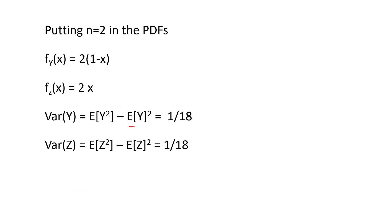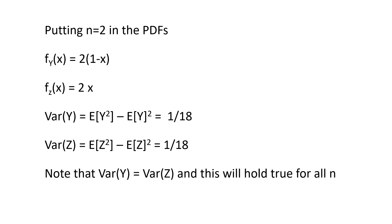Now we have E[Y], E[Y²], E[Z], and E[Z²]. The variances are: Var(Y) = E[Y²] − (E[Y])² and Var(Z) = E[Z²] − (E[Z])². Both turn out to be 1/18. This equality of variances is not a coincidence — it holds for all n.